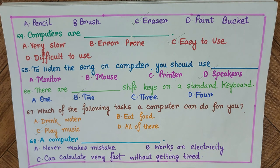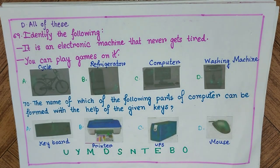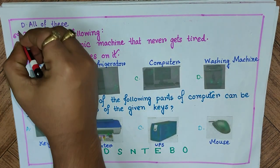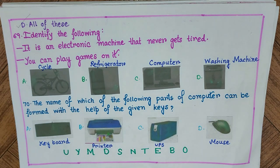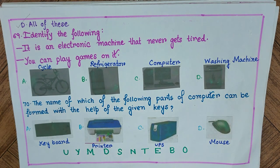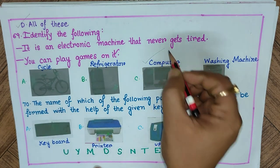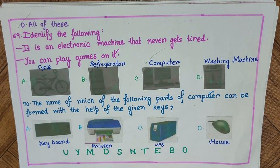Question 68: A computer — A) never makes a mistake, B) works on electricity, C) can calculate very fast without getting tired, D) all of these. The answer is D) all of these — all those options are true for a computer. Question 69: It is an electronic machine that never gets tired and you can play games on it. Options: A) cycle, B) refrigerator, C) computer, D) washing machine. The answer is C) computer.